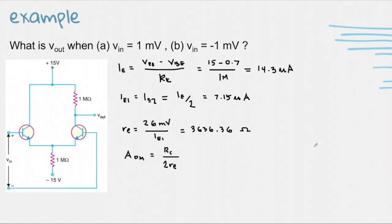And now we can use the equation for the differential mode voltage gain, which is RC over 2re. RC is 1 mega ohm and re is 3636.36 ohms. So the value of our gain is 137.5.